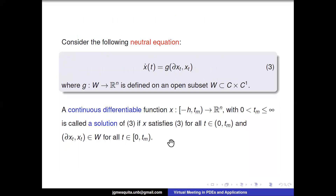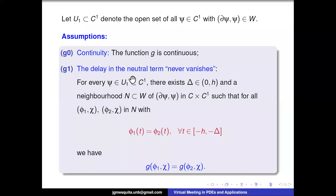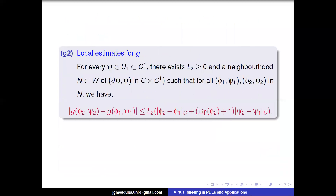We don't want the delay in the neutral term to vanish. To ensure this, we ask that if two functions are equal on a certain interval bounded away from zero, then G applied to those functions is equal. We also have some local estimates that allow us to prove existence, uniqueness, and related properties.